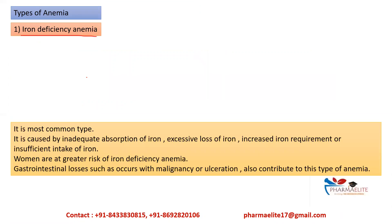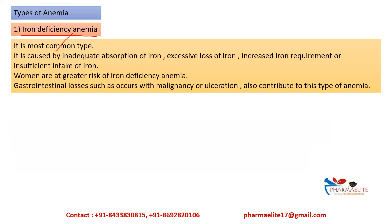Now let's look at the different types of anemias. The first is iron deficiency anemia — the most common type. It is caused by inadequate absorption of iron, excessive loss of iron, increased iron requirement, or insufficient intake of iron. Women are at greater risk due to heavy blood loss during menstruation or increased demand for iron by a growing fetus during pregnancy. Gastrointestinal losses, such as from malignancy or ulceration, can also contribute.